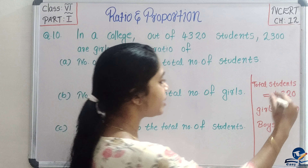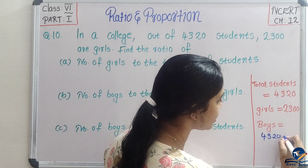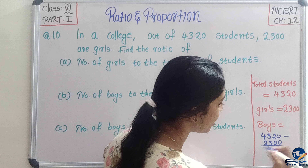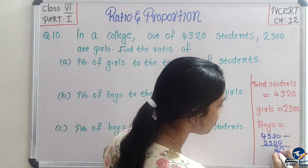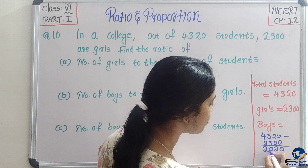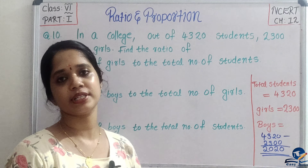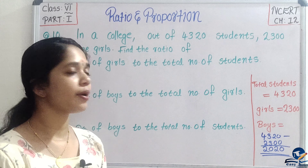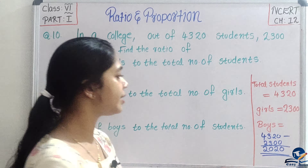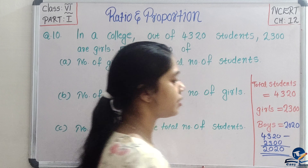Boys in the number of students: 4,320 minus 2,300. 0 minus 0 is 0; 2 minus 0 is 2; then 2, giving us 2,020. So number of boys is 2,020.